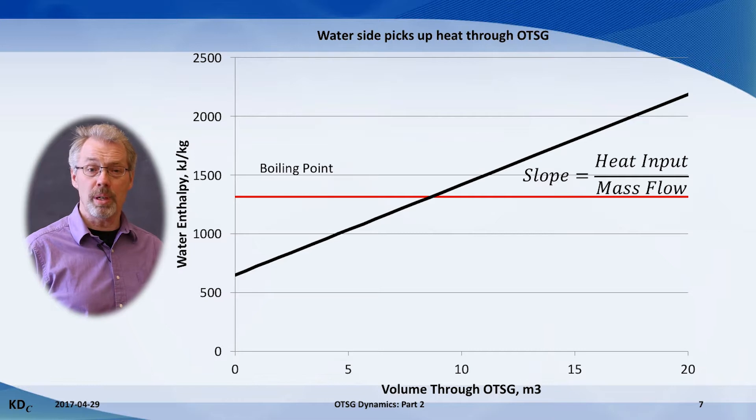In most OTSGs, there is one part of the convection section that has a much higher heat input than the rest of the OTSG, but uniform heat input is a convenient simplification.